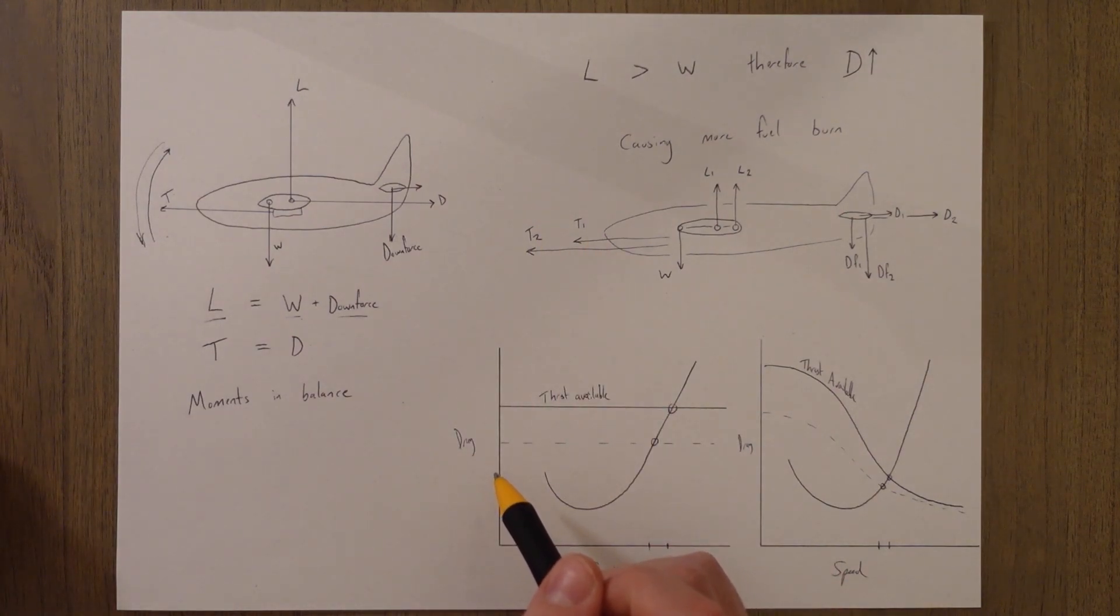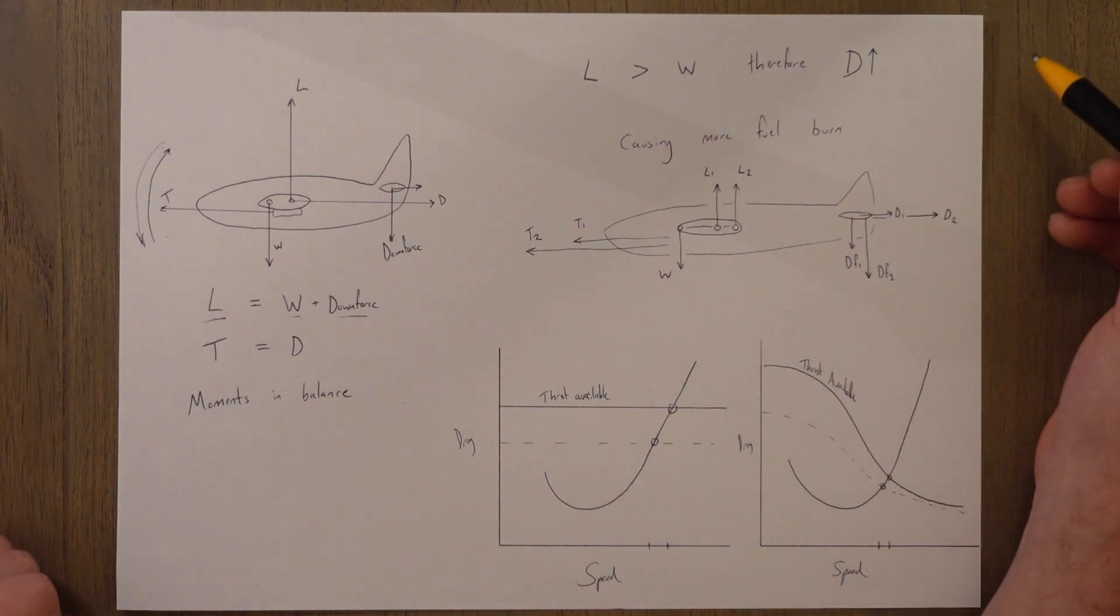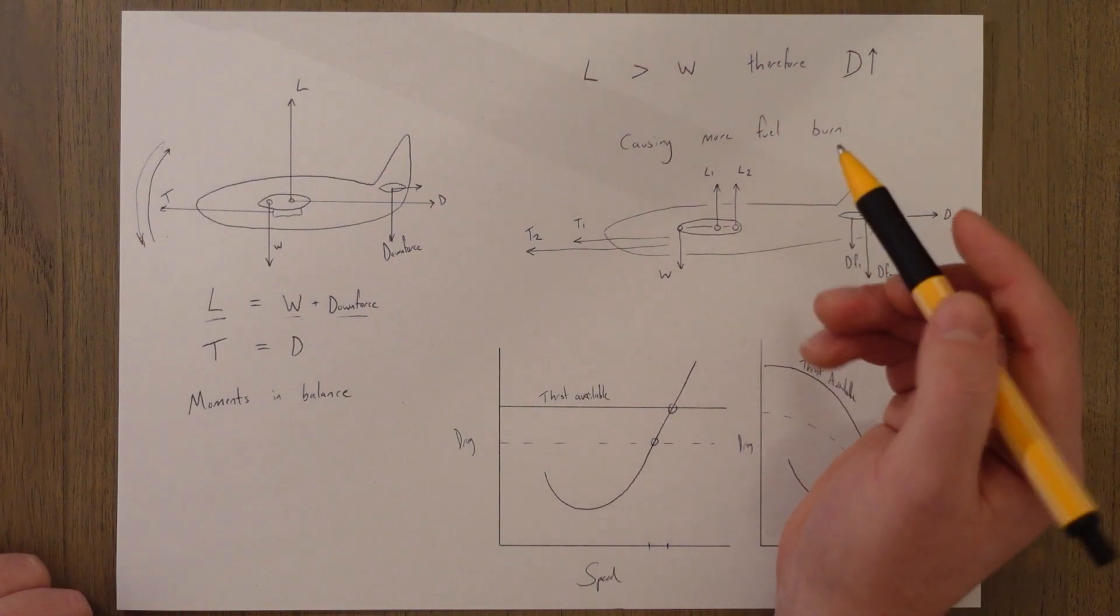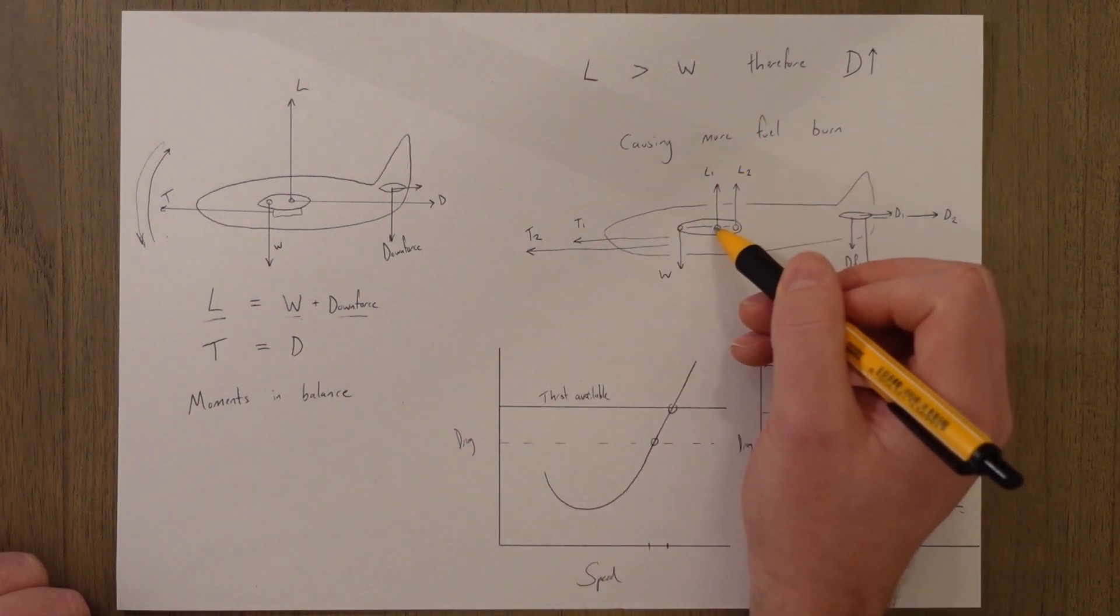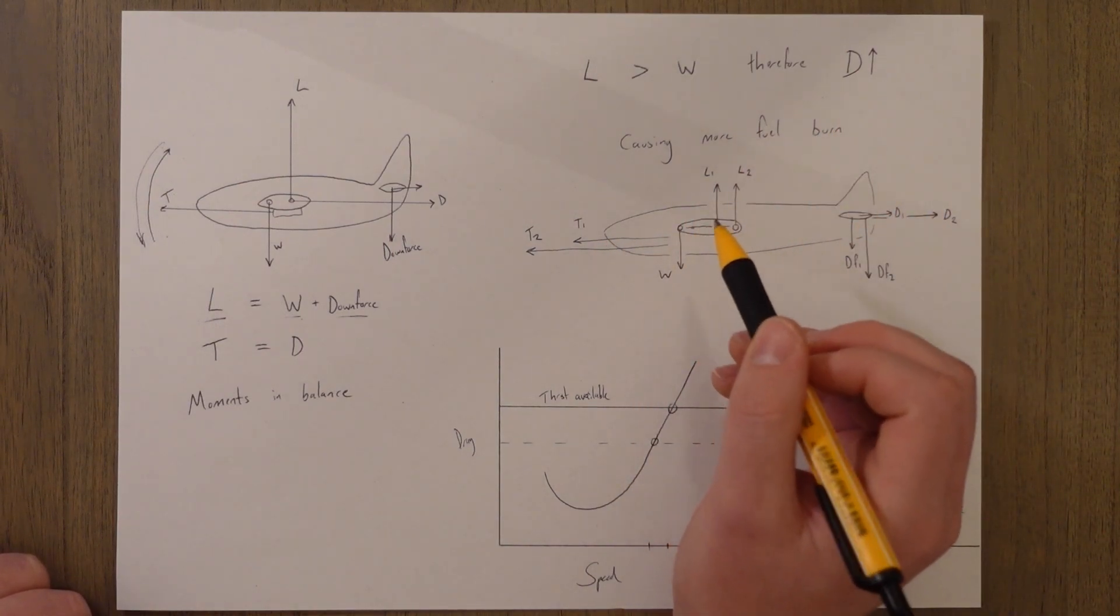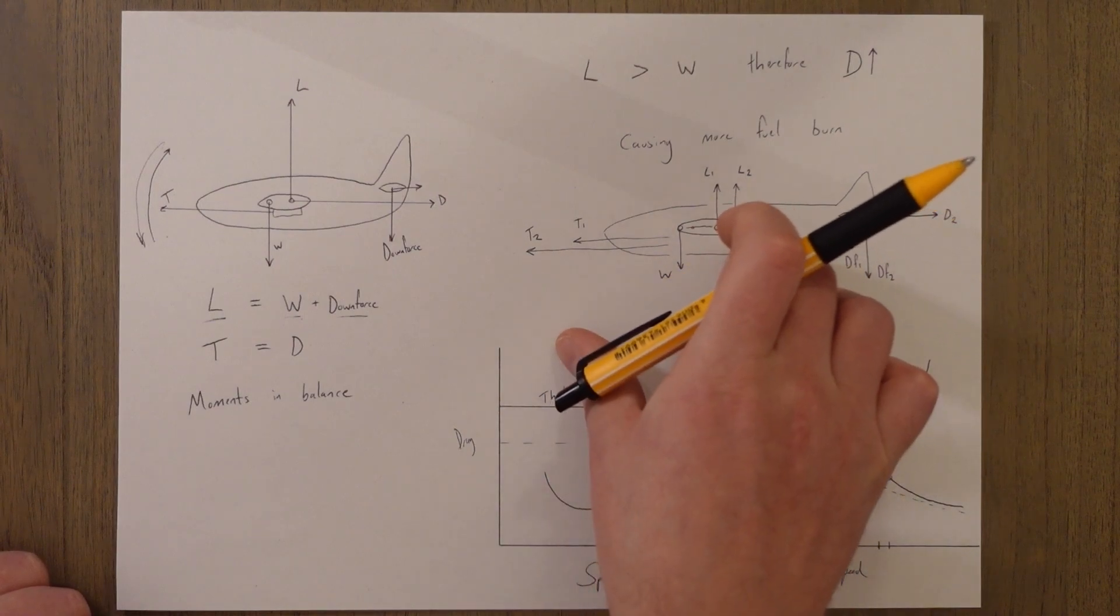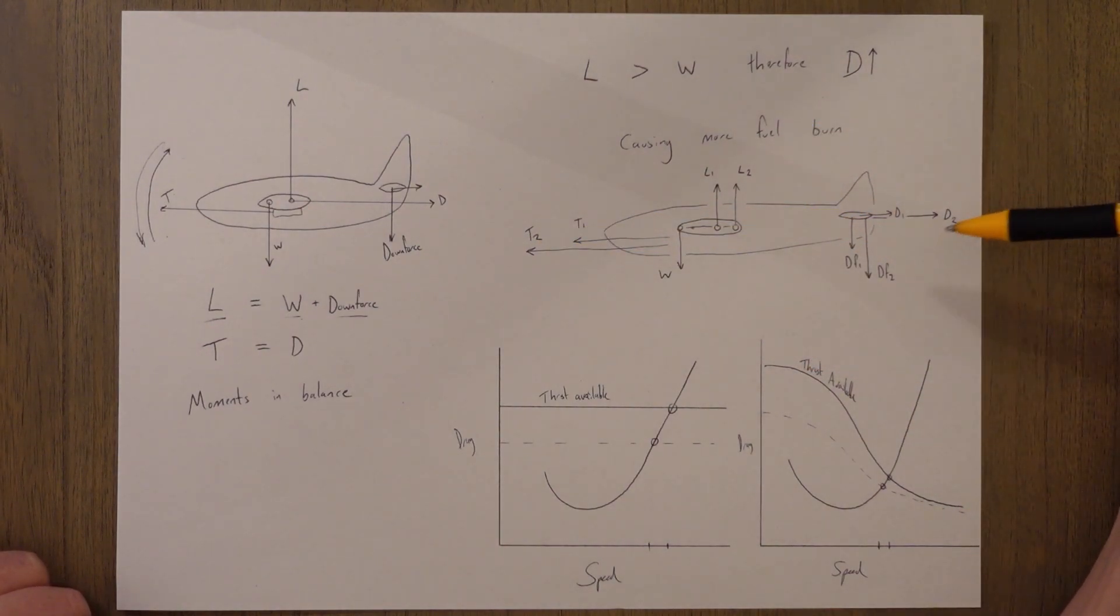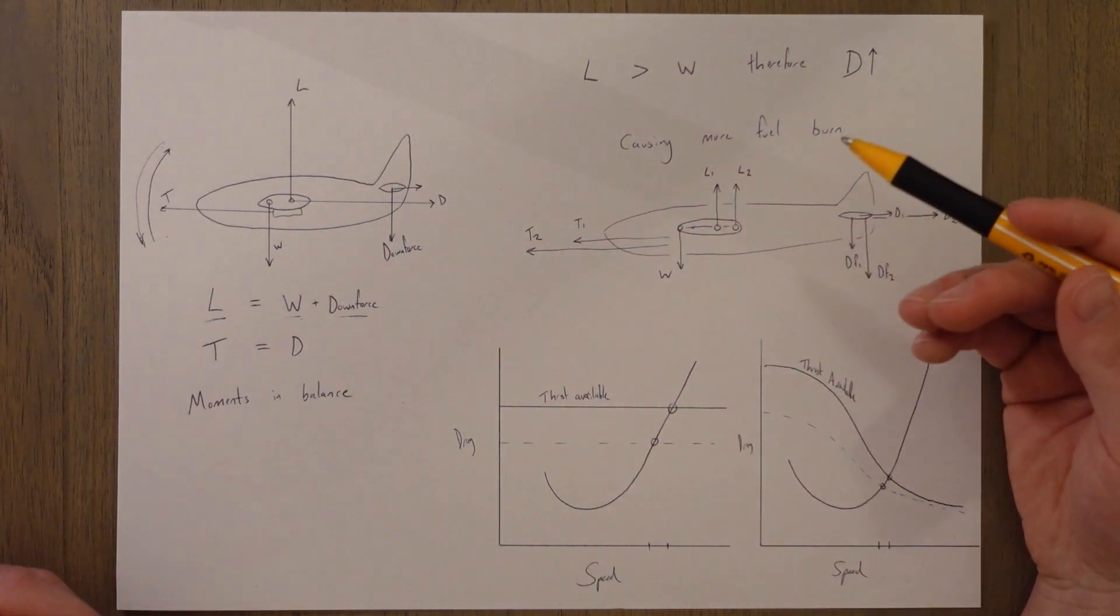We also have to have the moments in balance which is why we have the tail in the first place. Lift has to be larger than weight therefore the drag has to increase and that causes more fuel burn. The position of the center of gravity makes a difference. If we have a very forward center of gravity then the moment arm is longer. That means more of a moment pitching us down therefore requiring more downforce to pitch us back up. That means we get more drag, more trim drag, therefore needing more thrust to balance it out, more fuel burn, less efficient, but the stability benefits are pretty good.